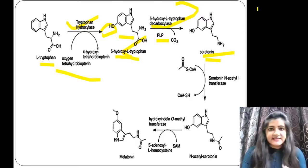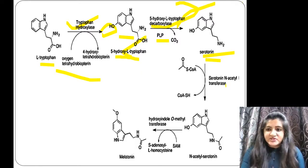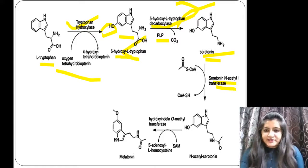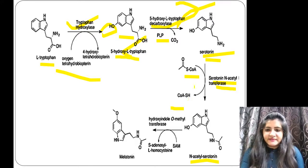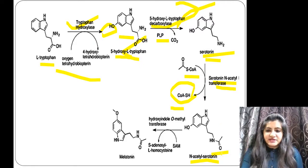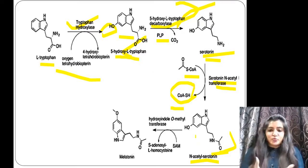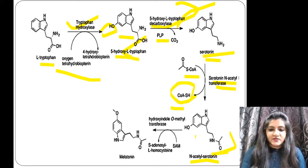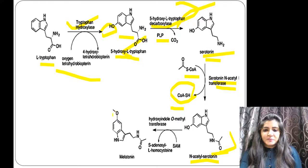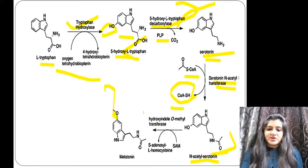Serotonin then acts as a precursor of melatonin. From serotonin, with the enzyme serotonin acetyltransferase, an acetyl group (COCH3) is added to generate acetylserotonin. Then with hydroxyindole-O-methyltransferase, a methyl group is transferred, and we get the final structure of melatonin — the OH is converted accordingly by the transferase enzyme.